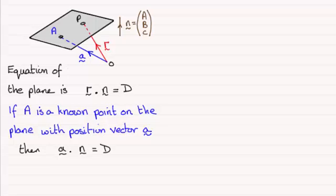If I call this equation 1 and substitute this result into 1, then what I get is that r dot n must equal, in place of d, a dotted with n. And this is another form of a plane.